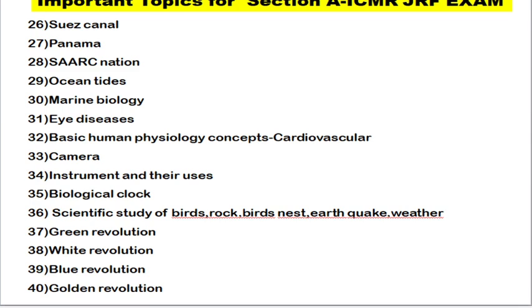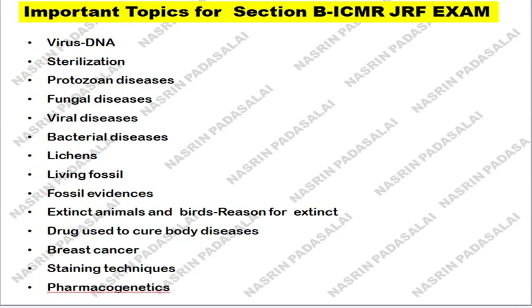Next, know about camera lenses and their uses. Next, know about the biological clock. Next, know about the scientific study of birds, rocks, bird nests, earthquakes, and weather. Next, know about the Green Revolution, White Revolution, Blue Revolution, and Golden Revolution. Moving to Section B: know about viral DNA — does the COVID virus consist of double-stranded DNA, single-stranded DNA, or RNA. Next, sterilization procedures — for all microbiological concepts you can refer to the Prescott book.